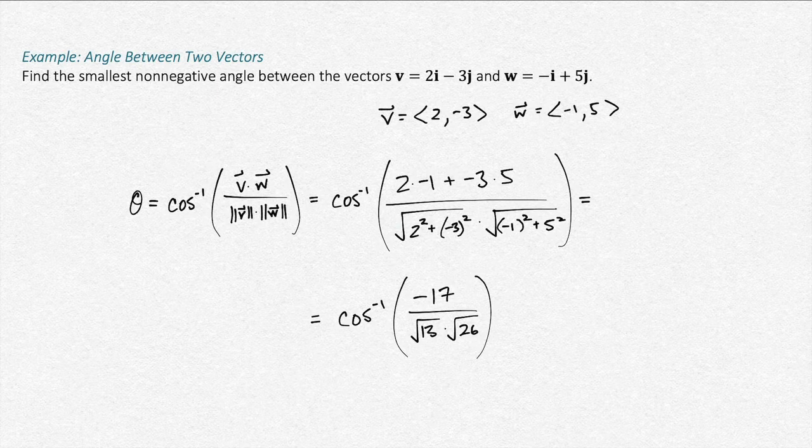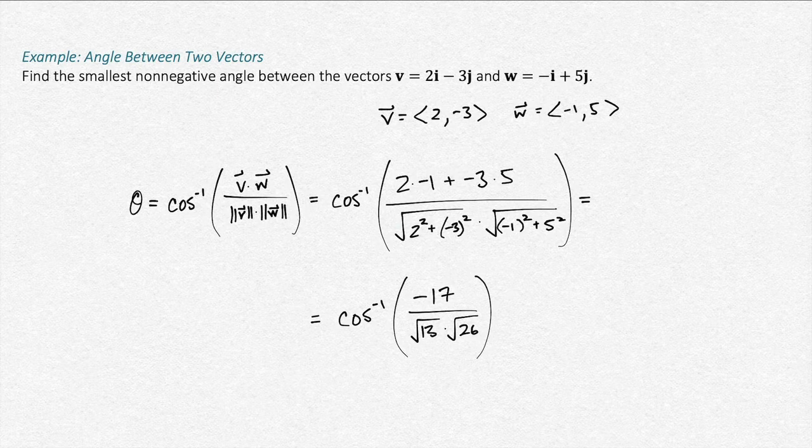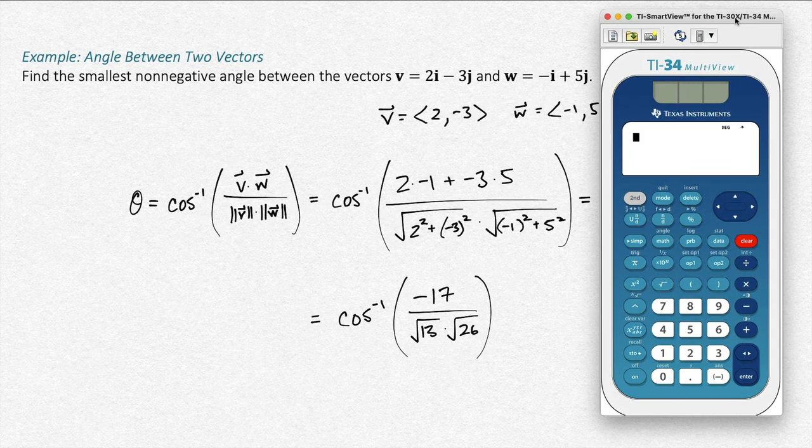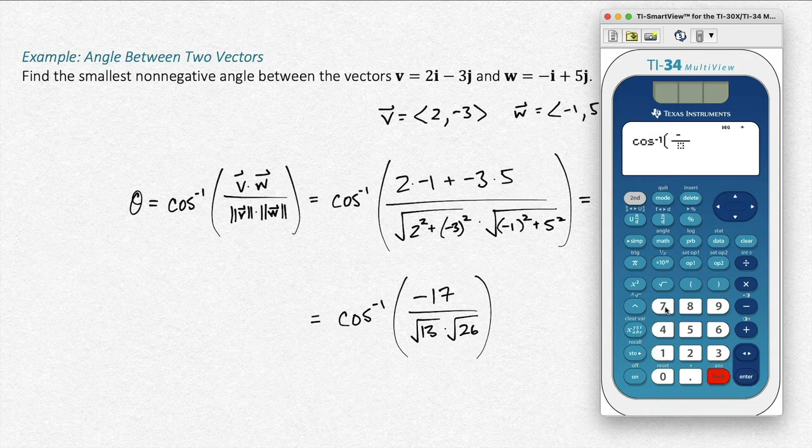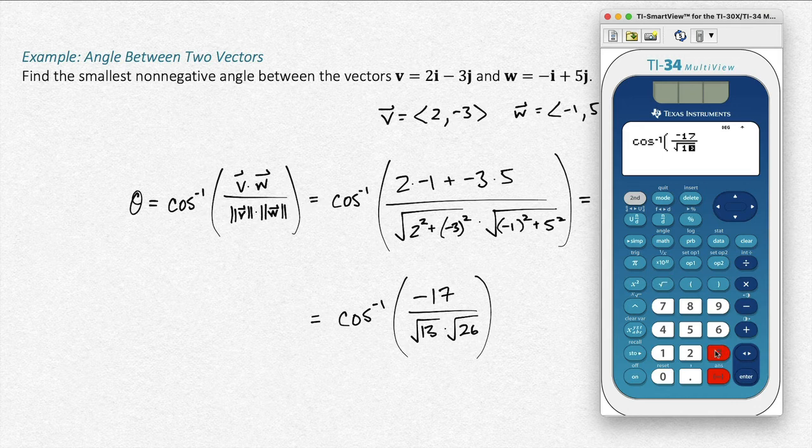That's what we're going to plug into our calculator. So we've got the cosine inverse of negative 17 over the square root of 13, and I can just combine that into a single square root there.